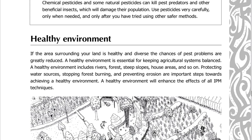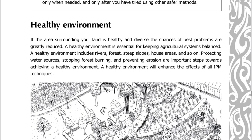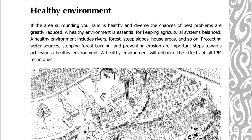Healthy environment. If the area surrounding your land is healthy and diverse, the chances of pest problems are greatly reduced. A healthy environment is essential for keeping agricultural systems balanced. A healthy environment includes rivers, forests, steep slopes, house areas, and so on. Protecting water sources, stopping forest burning, and preventing erosion are important steps toward achieving a healthy environment. A healthy environment will enhance the effects of all IPM techniques.